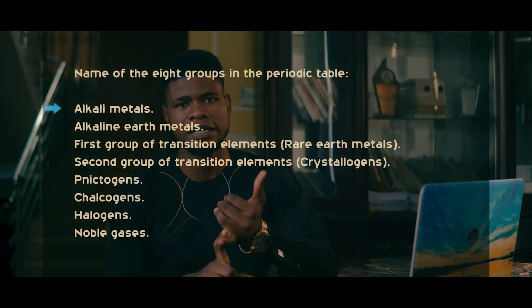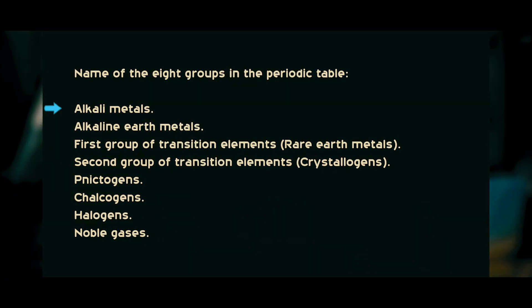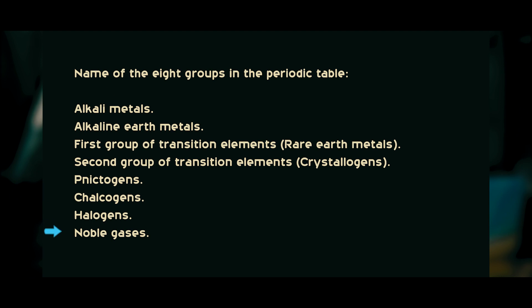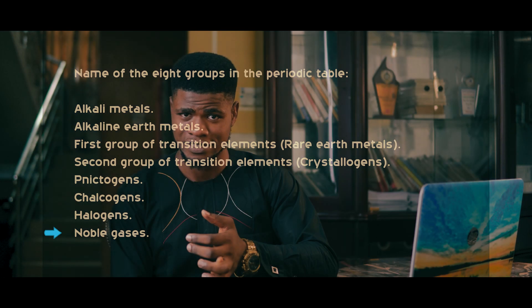Know the names of these groups. Group 1 are called alkali metals. Group 2, alkaline earth metals. Group 3 is the first group of transition elements. Group 4 is the second group of transition elements. Group 5 are called the pnictogens. Group 6, the chalcogens. Group 7, the halogens. Group 8 or Group 0, depending on the textbook you are using, are called noble gases or rare gases. It's tedious, but very, very important.